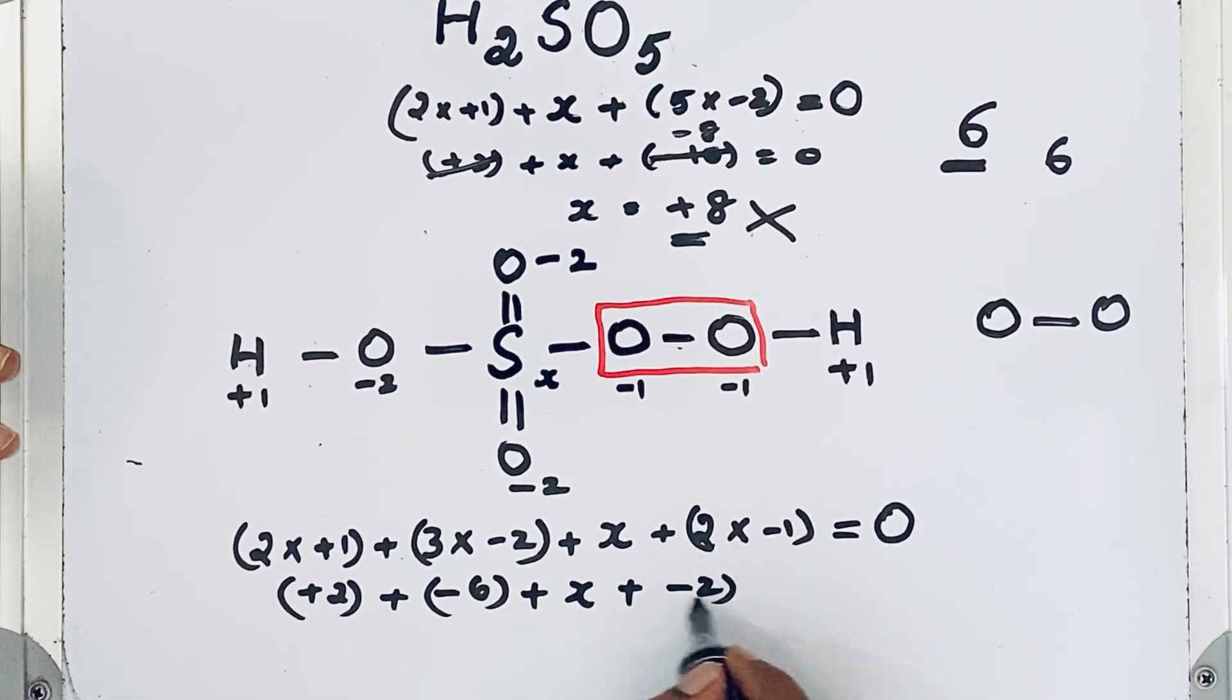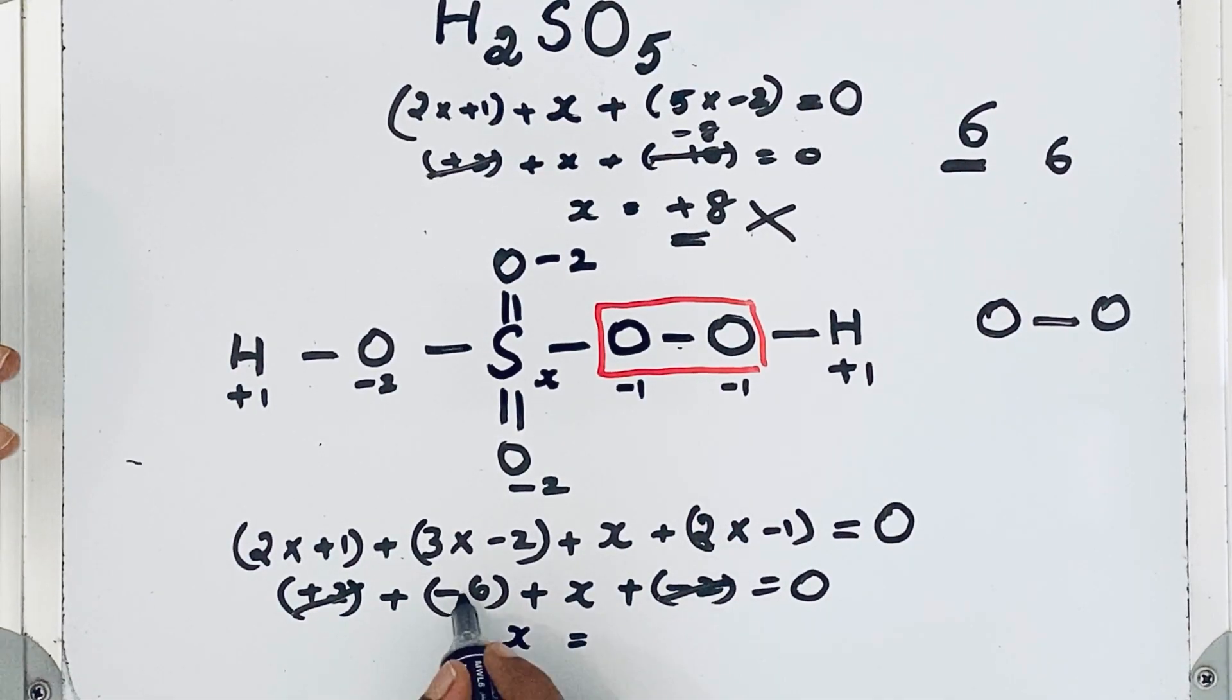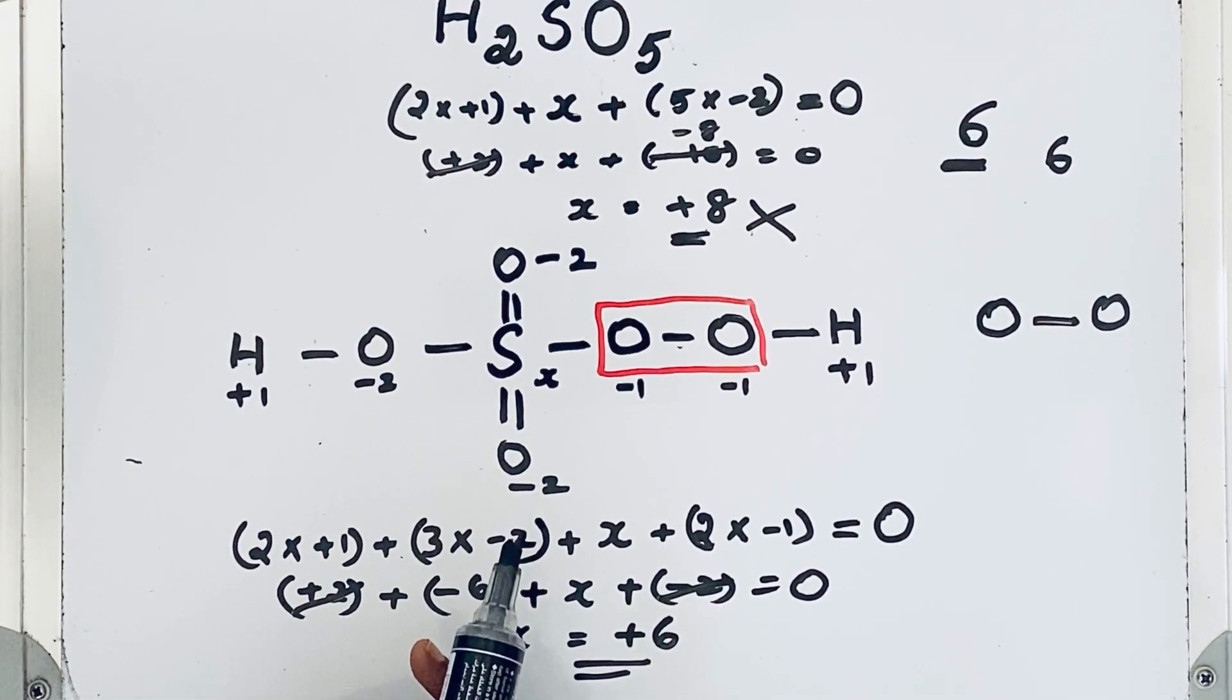Plus x, minus 2. That is equal to 0. So plus 2 minus 2. So x minus 6 when it comes to this side, plus 6. So oxidation number of sulfur in H2SO5 is plus 6. So thanks for watching.